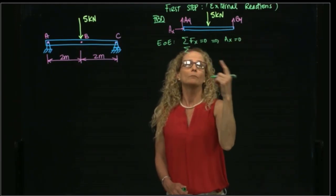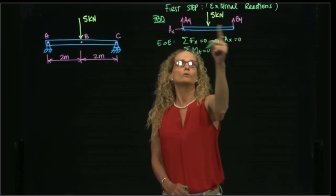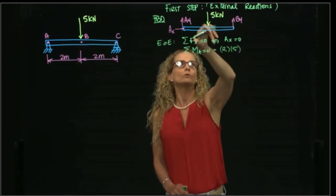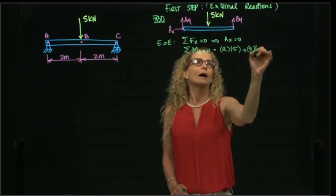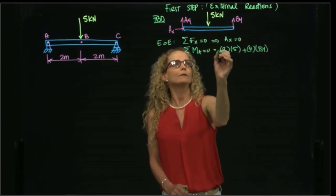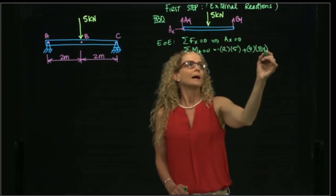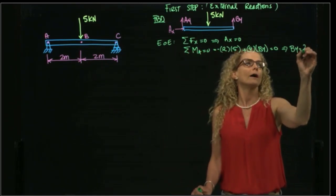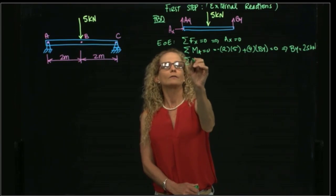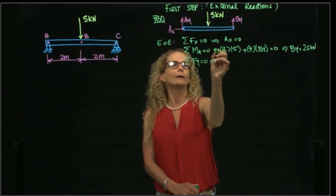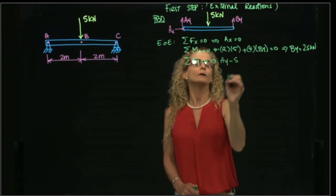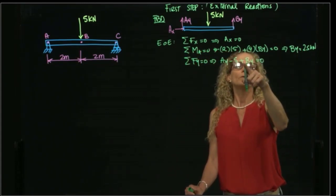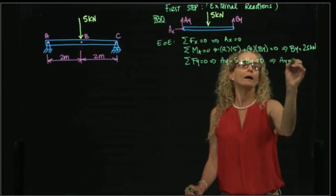I will take moment first to find one of these two forces. The moment at A gives us 2 times 5 kN plus 4 times BY equals 0. This is a negative moment and BY produces a positive moment. From here, BY is equal to 2.5 kN. Then adding forces in Y, AY minus 5 kN plus BY equals 0. Plugging in 2.5, I get that AY is also 2.5 kN.